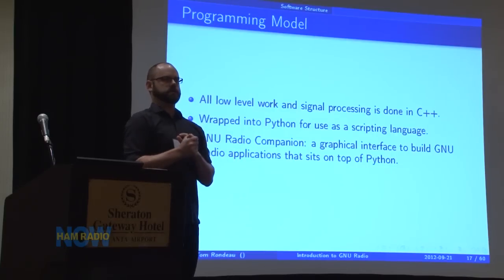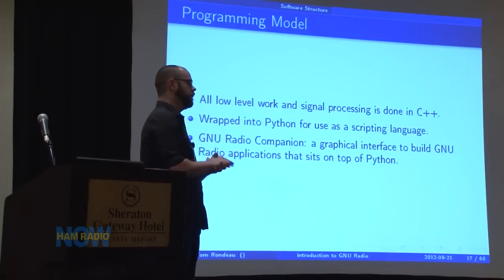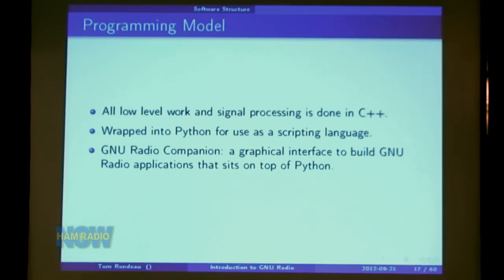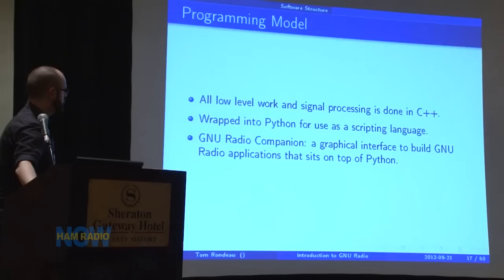Most of what our applications and use of GNU Radio is written in Python. That tends to take people back sometimes — they ask, isn't Python really slow? The thing is, we're just using Python as the top layer. All of the signal processing code is in C++ that's wrapped into Python, so we're not getting any overhead or penalty from running in Python — we're just using it because it's a very quick scripting language. And then we have GNU Radio Companion, a graphical tool that sits on top of Python. When you use it and create flow graph programs, it actually collapses down into a Python program that is then run.